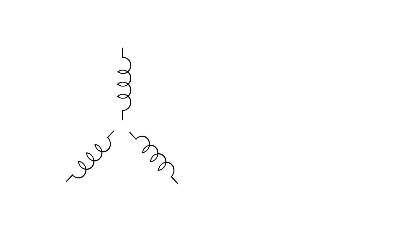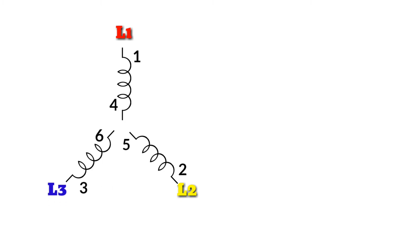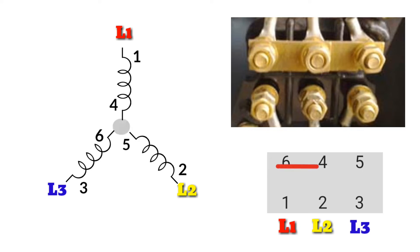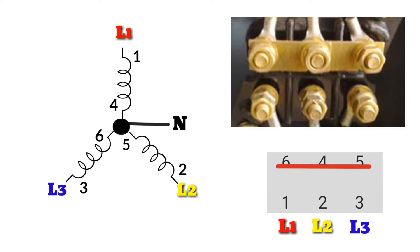This is a 6-lead star connection. Line 1 coil has number 1 and number 4, line 2 coil has number 2 and number 5, line 3 coil has number 3 and number 6. To make it a star connection, connect terminal number 6, number 4, and number 5 to each other. This point is known as the star point or neutral point N.